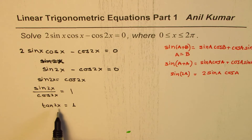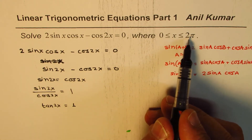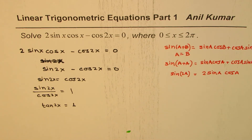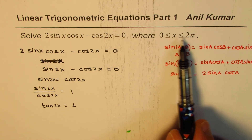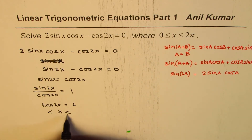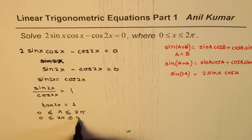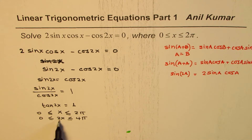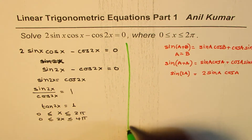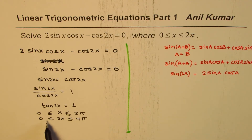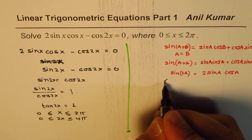Now we need to find the values of x between 0 and π for which tan 2x = 1. It's important to understand that if x is between 0 and π, then 2x will be between 0 and 2π — wait, multiply by 2: 0 to 2π. Since 2x is between 0 and 2π, the number of solutions will not be 2 but 4. So we expect 4 solutions.